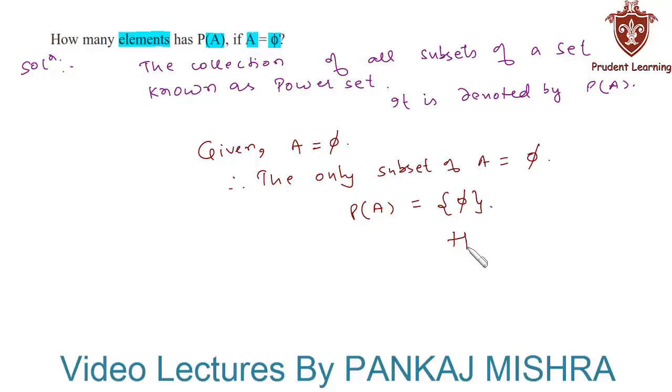Hence the number of elements of power set of A is 1. So this completes our solution.